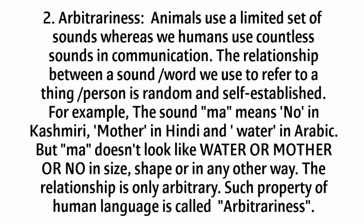2. Arbitrariness. Animals use a limited set of sounds, whereas we humans use countless sounds in communication. The relationship between a sound or word we use to refer to a thing or person is random and self-established. For example, the word 'ma' means 'no' in Kashmiri, 'mother' in Hindi, and 'water' in Arabic. But 'ma' doesn't look like water or mother or 'no' in size, shape, or in any other way. The relationship is only arbitrary. Such property of human language is called arbitrariness.